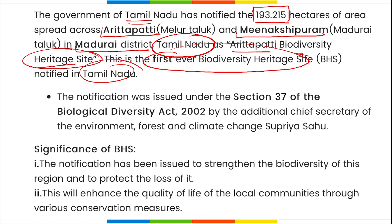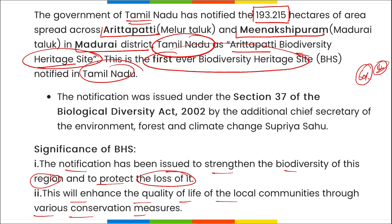This is the first-ever biodiversity heritage site of Tamil Nadu. A notification has been issued to strengthen the biodiversity of the region and to protect against its loss — as human development and industrialization has caused around 60% of species to be lost in recent years. This site will enhance the quality of life of local communities through various conservation measures.